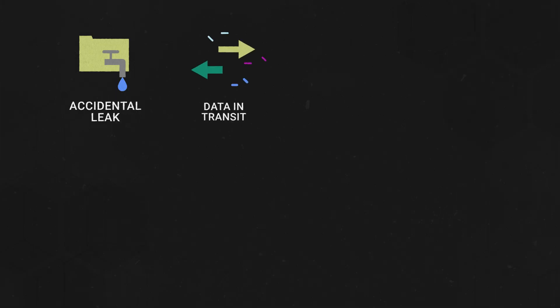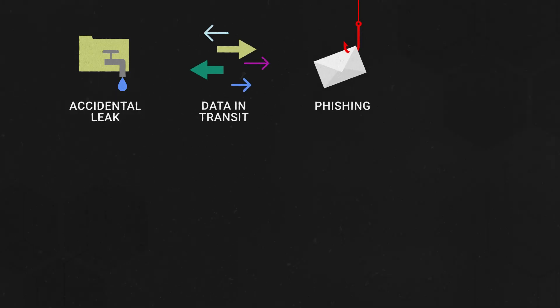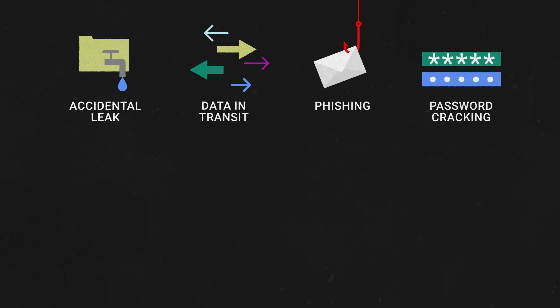considering the current cyber landscape, include accidental leaks like from configuration mistakes or lapses in judgment with data, data in transit that might be intercepted if not encrypted, phishing and other social engineering attacks that trick a user into giving an attacker access, and password cracking, especially if a system allows unlimited password attempts.